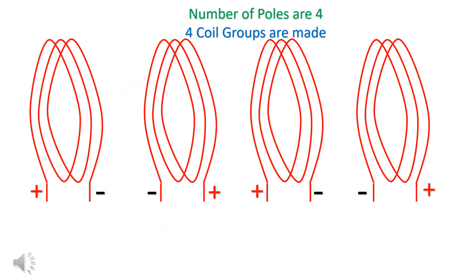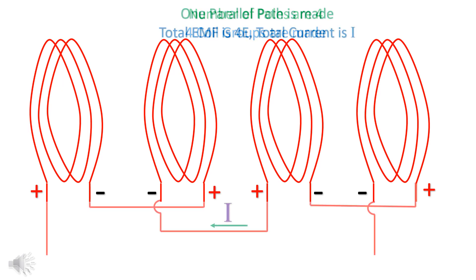Number of poles are 4. Four coil groups are made. One parallel path is made. Total EMF is 4E. Total current is I.